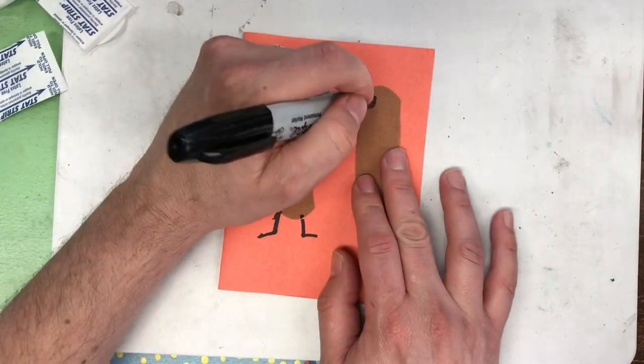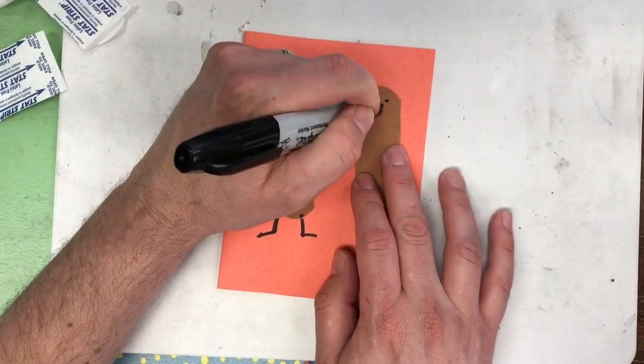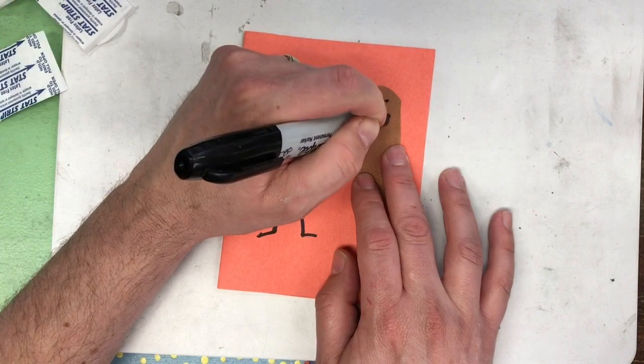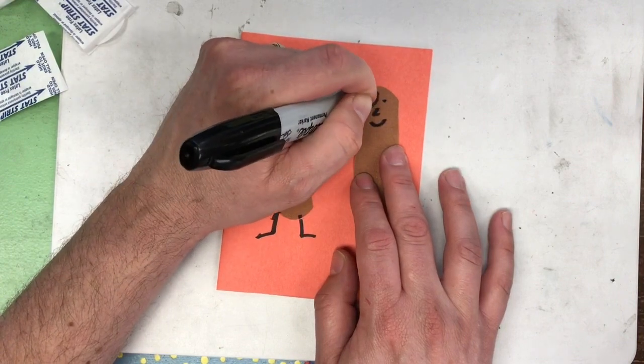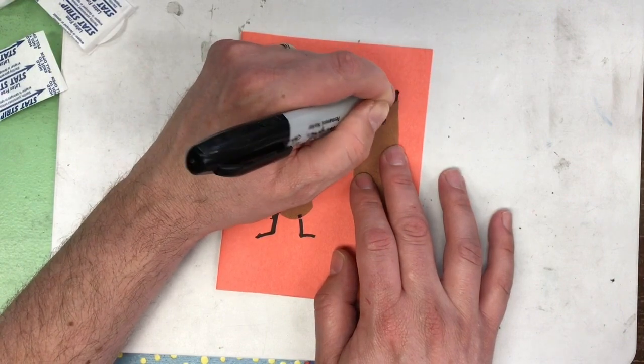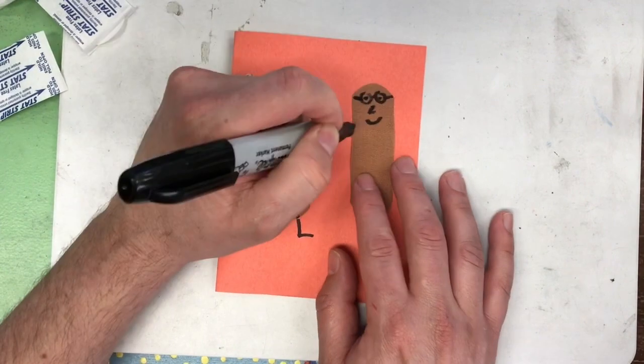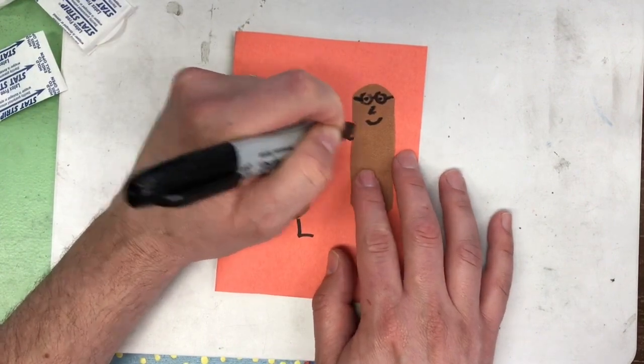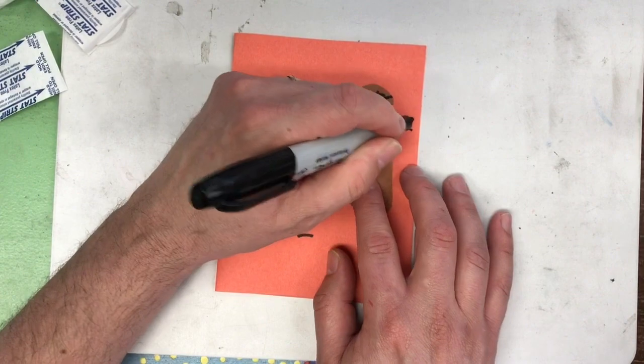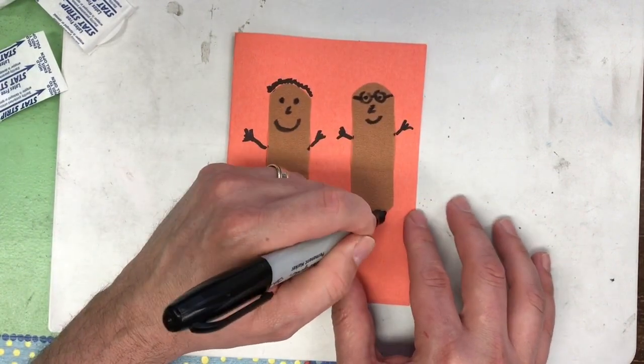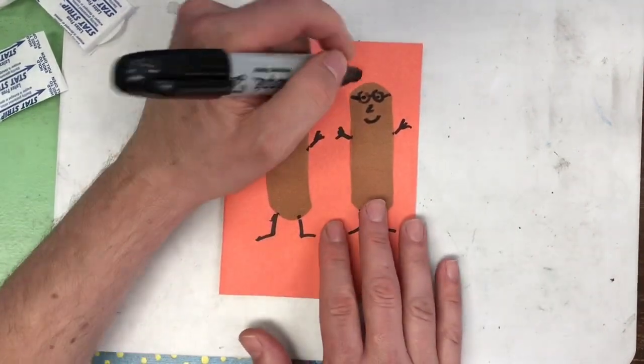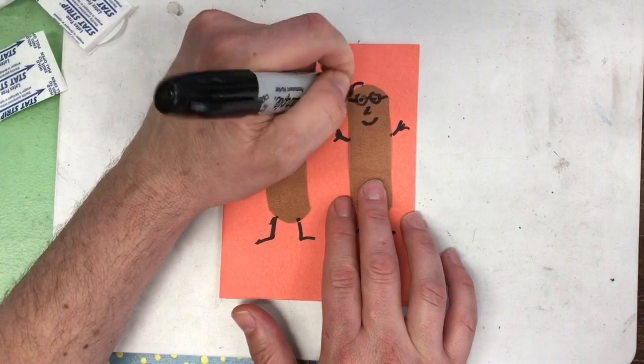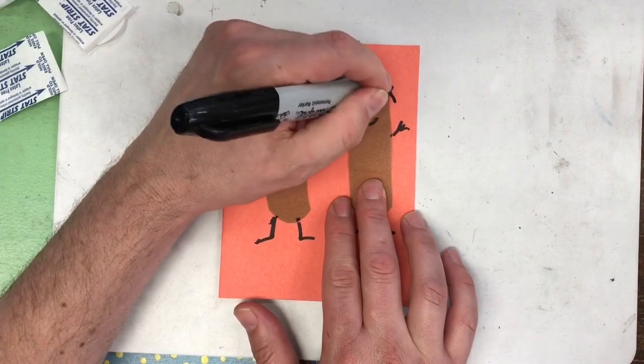Then you're gonna do the same thing to this one on this side. You can do eyes, nose, a smile. If you want to do glasses, you can do that. You don't have to give them hair if you don't want. You can add longer hair for this one if you'd like.